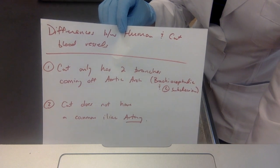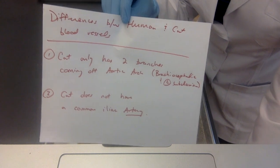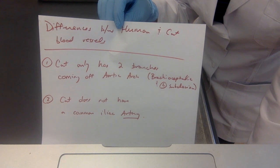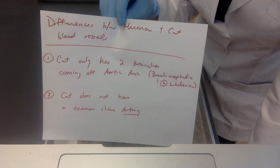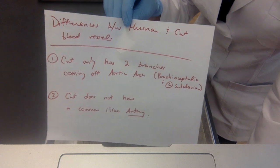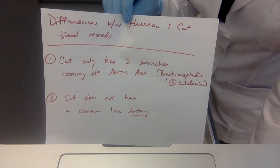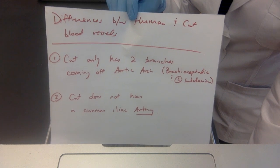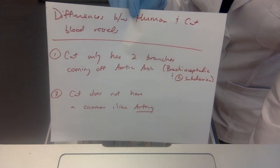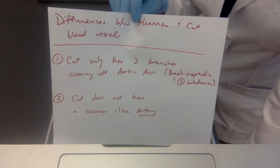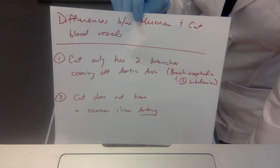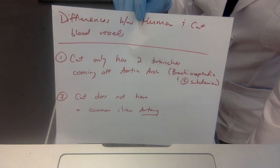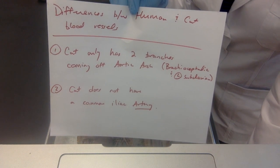This is a human anatomy and physiology class. However, cats are easier to get and the cat vasculature is very similar to humans. Here are two differences to know. Cats only have two branches coming off their aortic arch. Humans have three arterial branches: brachiocephalic, left common carotid, and left subclavian. Cats only have brachiocephalic and left subclavian.